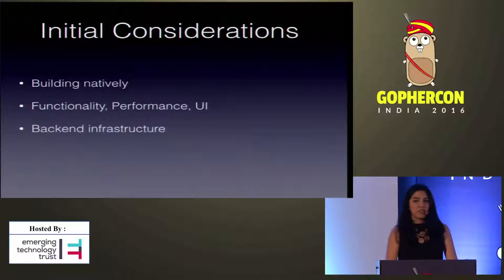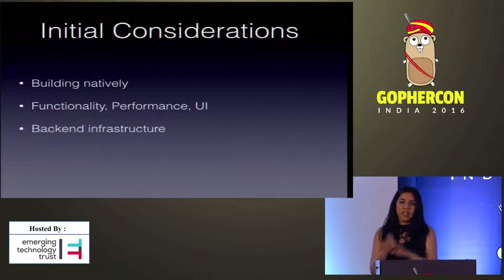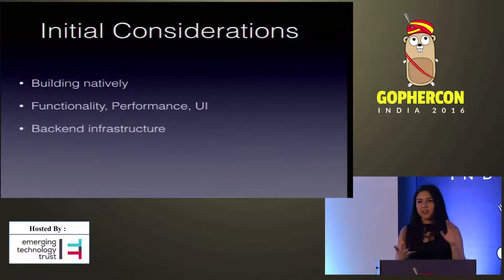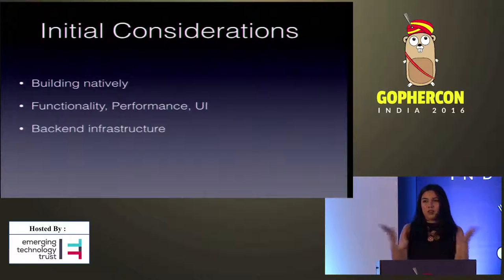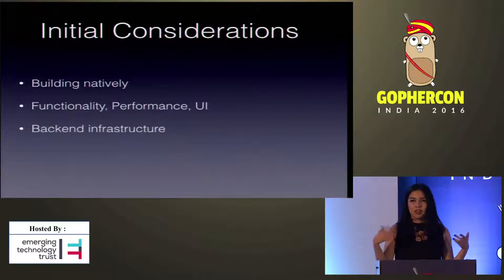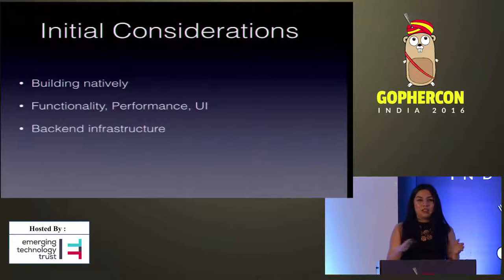The initial considerations for building a mobile product are whether you should build it natively or with a framework, or if it's even worth it to write a mobile app and not just a web app. Then you have to consider functionality, performance, and UI. Java and the UI for Android are very connected — if something goes wrong in the threads for concurrency in Java, the UI freezes and it's the end of the story. That's super important to take into consideration.